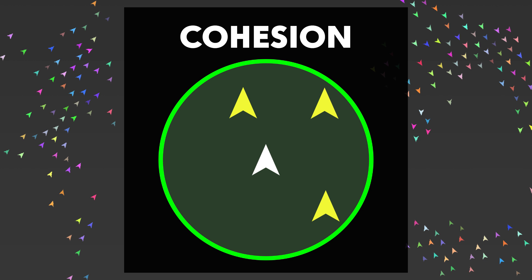Cohesion compels each agent in a flock to stay grouped with its neighbors. The agent does this by finding the midpoint between all its neighbors and navigating toward it. This behavior typically needs to be mitigated with some steering or smoothing in order to avoid extreme direction changes.